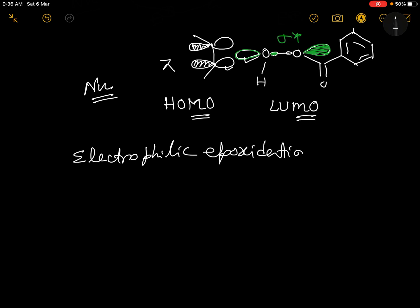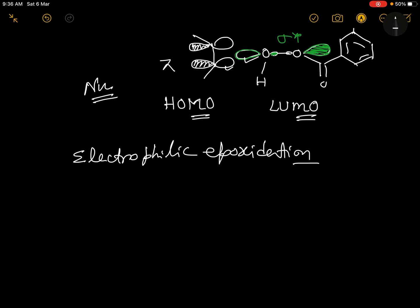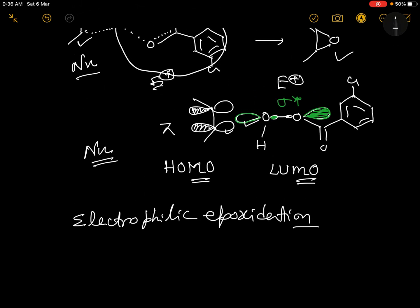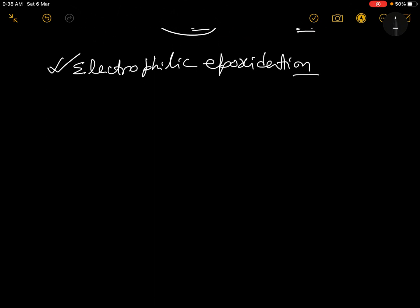In electrophilic epoxidation, if you have a more electron-rich alkene it will attack faster, because it raises the energy of the HOMO and favors attack on the LUMO (σ* orbital). So in electrophilic epoxidation, a more electron-rich alkene reacts faster. That is why for electron-rich alkenes we use meta-chloroperoxybenzoic acid (mCPBA).